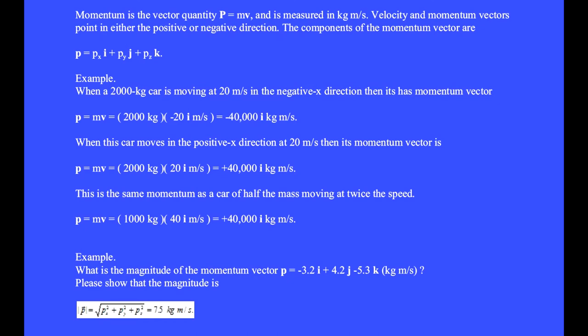Velocity and momentum vectors point in either the positive or negative direction. The components of the momentum vector are P equals PX i-hat plus PY j-hat plus PZ k-hat. For example, when a 2,000 kg car is moving at 20 meters per second in the negative x direction, then it has momentum vector P equals 2,000 kg times minus 20 meters per second, equals minus 40,000 i-hat kilogram meters per second.